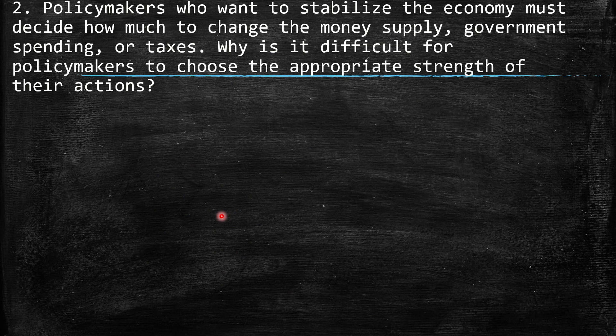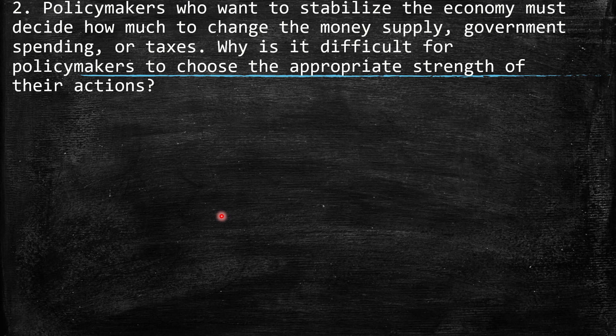Second, policymakers who want to stabilize the economy must decide how much to change the money supply, government spending, or taxes. Why is it difficult for policymakers to choose the appropriate strength of their actions? Well, when we talk about money supply, we know that it affects the reserves of the banks.